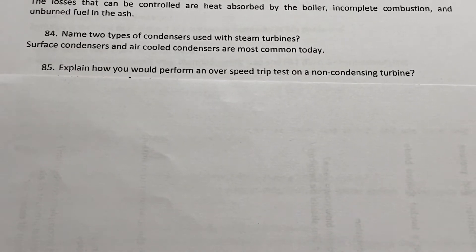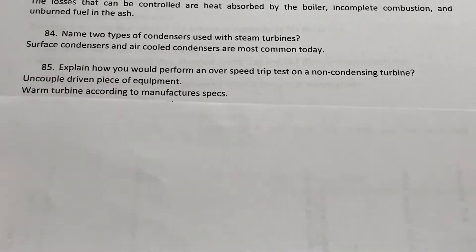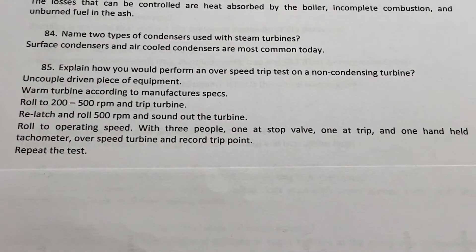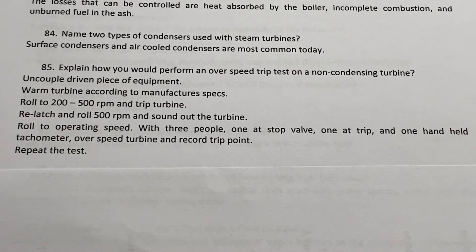Explain how you would perform an overspeed trip test on a non-condensing turbine. First, uncouple the driven piece of equipment, warm the turbine according to manufacturer's specifications, then roll it to 200 to 500 RPM and trip the turbine.